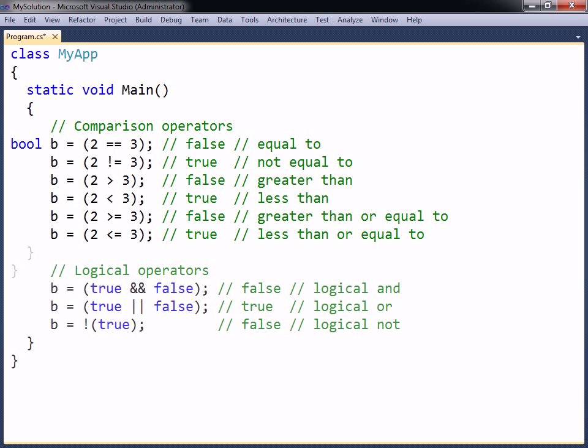The logical operators are often used together with the comparison operators. Logical and evaluates to true if both the left and right sides are true, and logical or evaluates to true if either the left or right side is true. The logical not operator is used for inverting a boolean result.